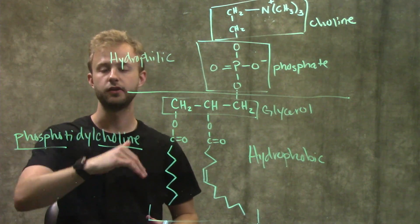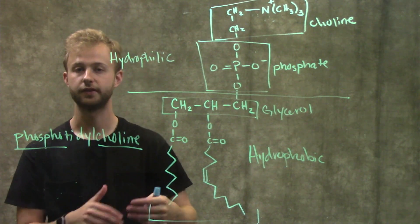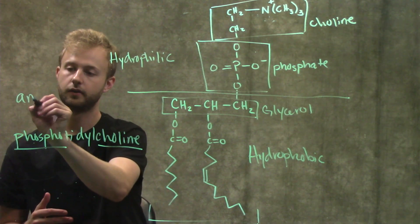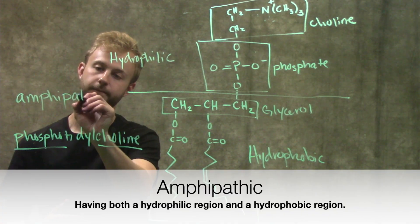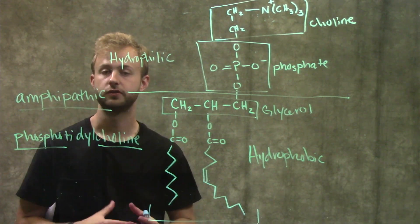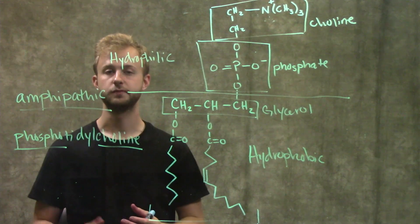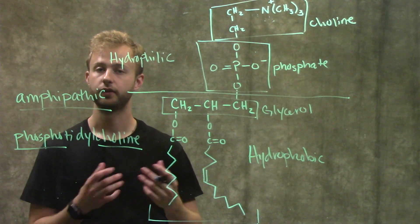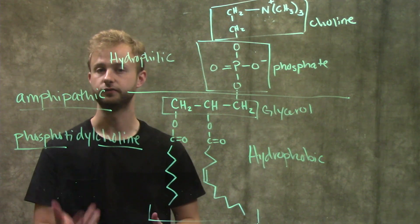And so whenever we have a molecule that has two regions, one that's hydrophobic, one that's hydrophilic, that molecule is called amphipathic. So phospholipids are always going to be amphipathic molecules which means they have a hydrophobic and hydrophilic region so they can interact with both hydrophobic substances and hydrophilic substances.